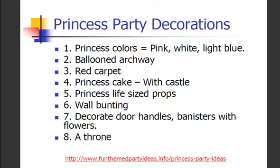Don't forget your princess cake — if you can get one professionally made it shouldn't cost too much. Make sure you have a castle on top. You can also get some life-sized props of princesses; a good place to go for them is Amazon or a DVD rental store near where you live — ask if you can borrow one of their props. Your wall bunting should of course go for the colours pink, white and light blue. You can decorate your door handles and banisters with flowers and maybe sprinkle a little bit of glitter on there as well. If you choose to go for a throne, then of course it's the birthday girl who gets to sit on it, and you can also deck out the throne in flowers.